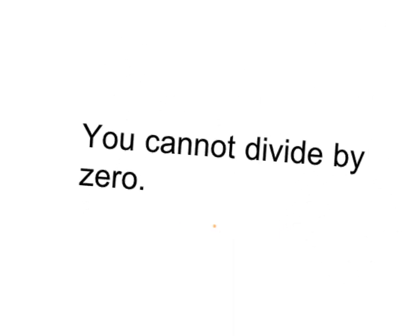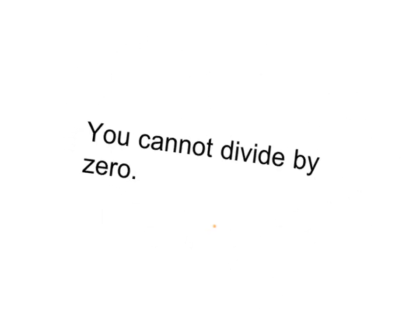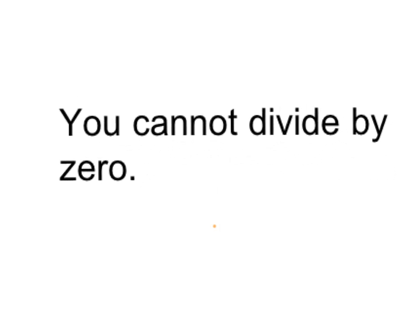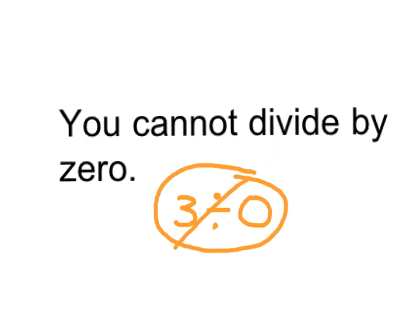Our first rule is this: you cannot divide by 0. You just cannot do it. Take a moment to copy it down for yourself. 3 divided by 0 — you cannot do it.